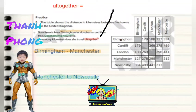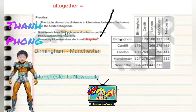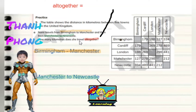We are looking at addition and subtraction word problems. Practice question five says: the table shows the difference in kilometres between five towns in the United Kingdom. Naomi travels from Birmingham to Manchester and then from Manchester to Newcastle. How many kilometres does she travel altogether?